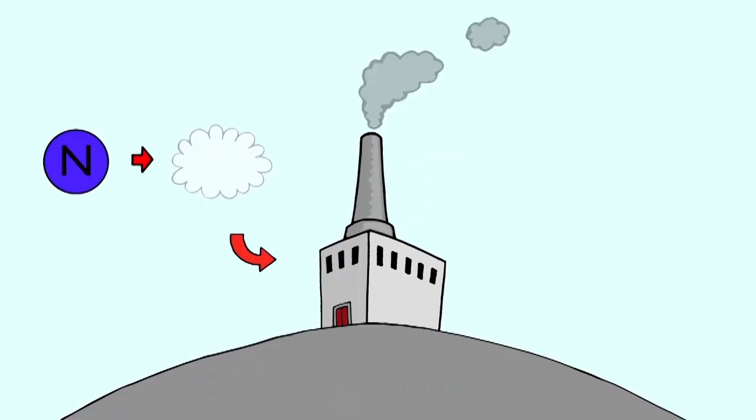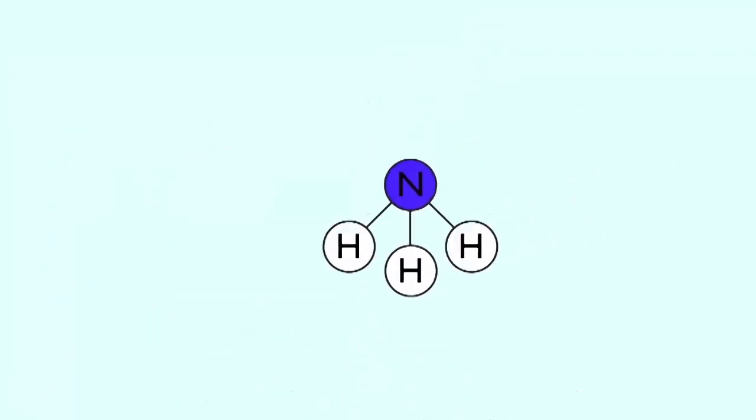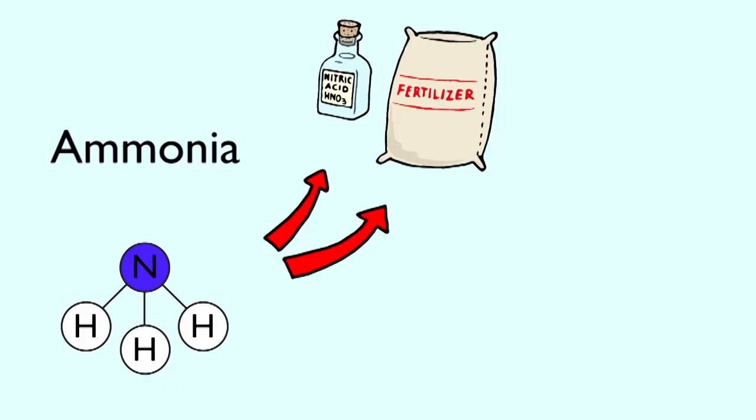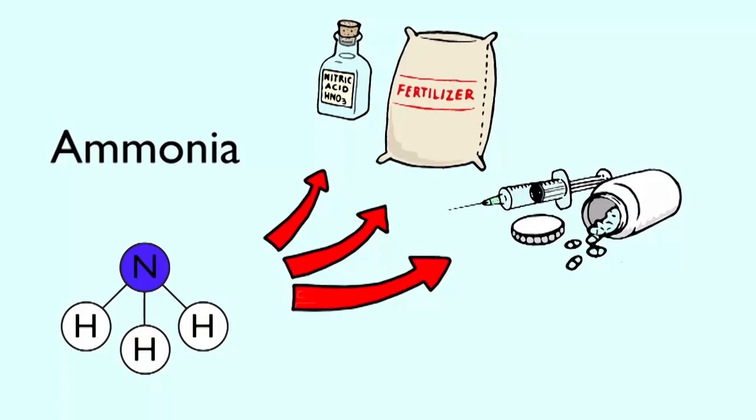We will first discuss the uses of nitrogen as a gas. Nitrogen gas is used in the Haber process for the industrial manufacture of ammonia. Ammonia is an important starting material in the production of nitric acid, fertilizers, pharmaceutical products, and explosives.